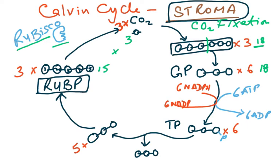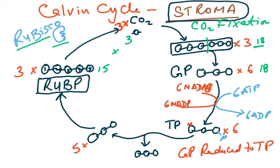A phosphate is added to GP and then hydrogen is added from NADPH. Six ATP molecules are consumed and six NADPH molecules donate their hydrogen. So we say GP has been reduced to TP — and this gets you two marks: GP reduced to TP.